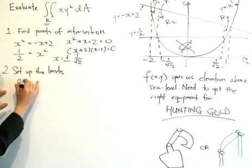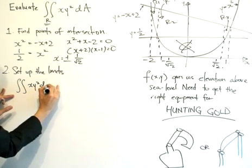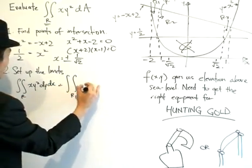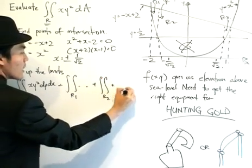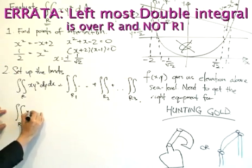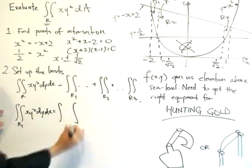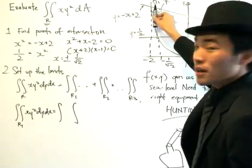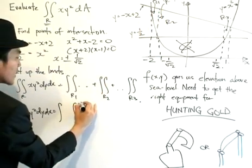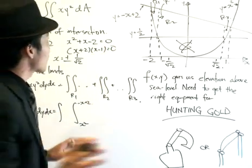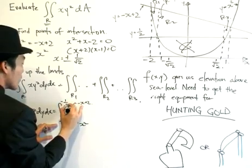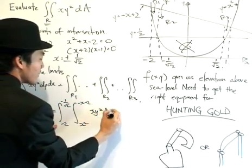The double integral over R can be subdivided into R1, plus R2, plus R3. For R1, think of the vertical line going down — the curve at the bottom is x squared, and going up, the curve at the top is minus x plus 2. The x endpoints for R1 are minus 2 and minus 1 divided by root 2. The function stays the same: x times y squared, dy dx.